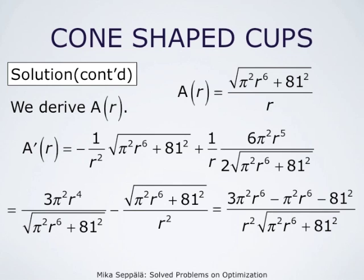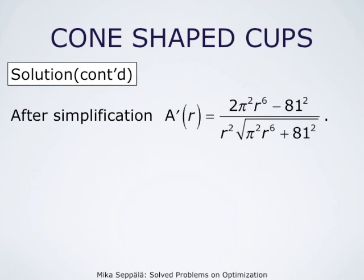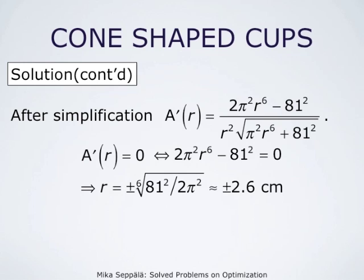In the numerator, 3 times pi squared r to the sixth minus pi squared r to the sixth amounts to 2 times pi squared r to the sixth. After simplifications, the derivative is 2 times pi squared r to the sixth minus 81 squared, divided by r squared times square root of pi squared r to the sixth plus 81 squared. When r is positive, the denominator is always positive, so A prime of r equals 0 is equivalent to 2 times pi squared r to the sixth minus 81 squared equals 0. This gives r equals the sixth root of 81 squared divided by 2 times pi squared, approximately plus or minus 2.6 centimeters.